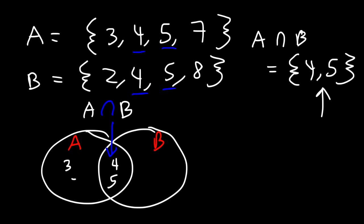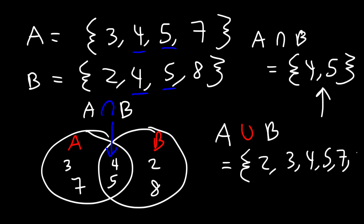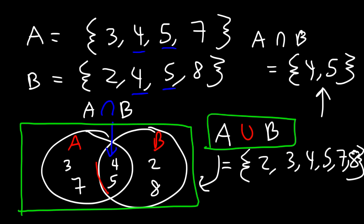A also contains 3 and 7, and B also contains 2 and 8. But 4 and 5 are common to A and B, so we put that in the middle. Now the union of these two sets is basically everything — it contains the numbers 2, 3, 4, 5, 7, and 8. This entire system with the two circles represents the union of A and B because it contains all the numbers. But the intersection is limited to the overlapping region, because it only contains the elements common to both sets. Hopefully this helps you see the relationship between intersection and union of sets as it relates to Venn diagrams.